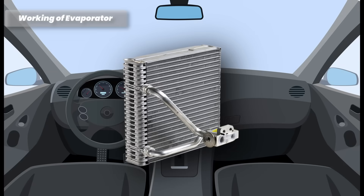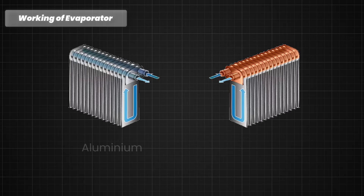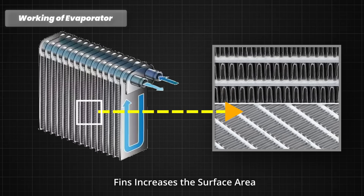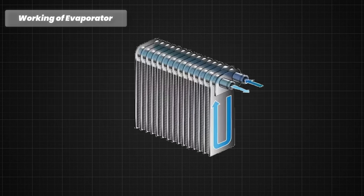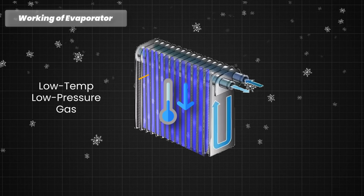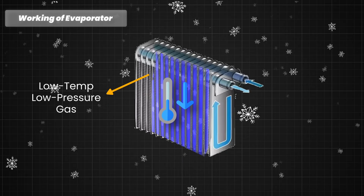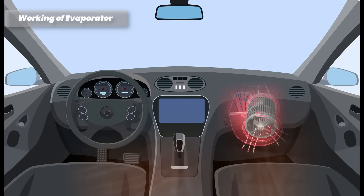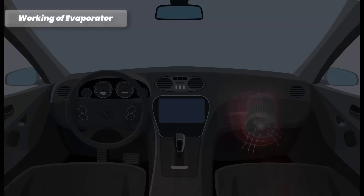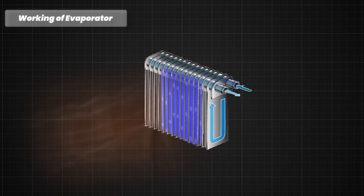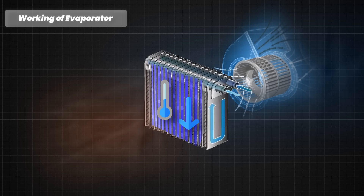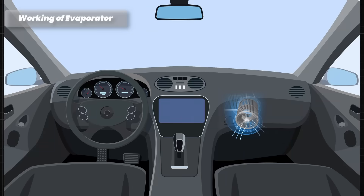The evaporator is typically located inside the HVAC unit behind the dashboard, and is typically made of aluminum or copper. These coils contain the refrigerant that absorbs heat from the air, and fins attached to the coils increase the surface area for improved heat transfer. The evaporator coils are cold because the refrigerant inside has undergone a phase change from a high-pressure liquid to a low-pressure gas, causing a significant drop in temperature. Warm cabin air is drawn into the HVAC unit by the blower fan, and as it passes over the evaporator coils, the refrigerant absorbs heat from the air and makes it cooler. The now-cooled air is blown out by the blower fan and circulated into the vehicle's cabin through the air vents.